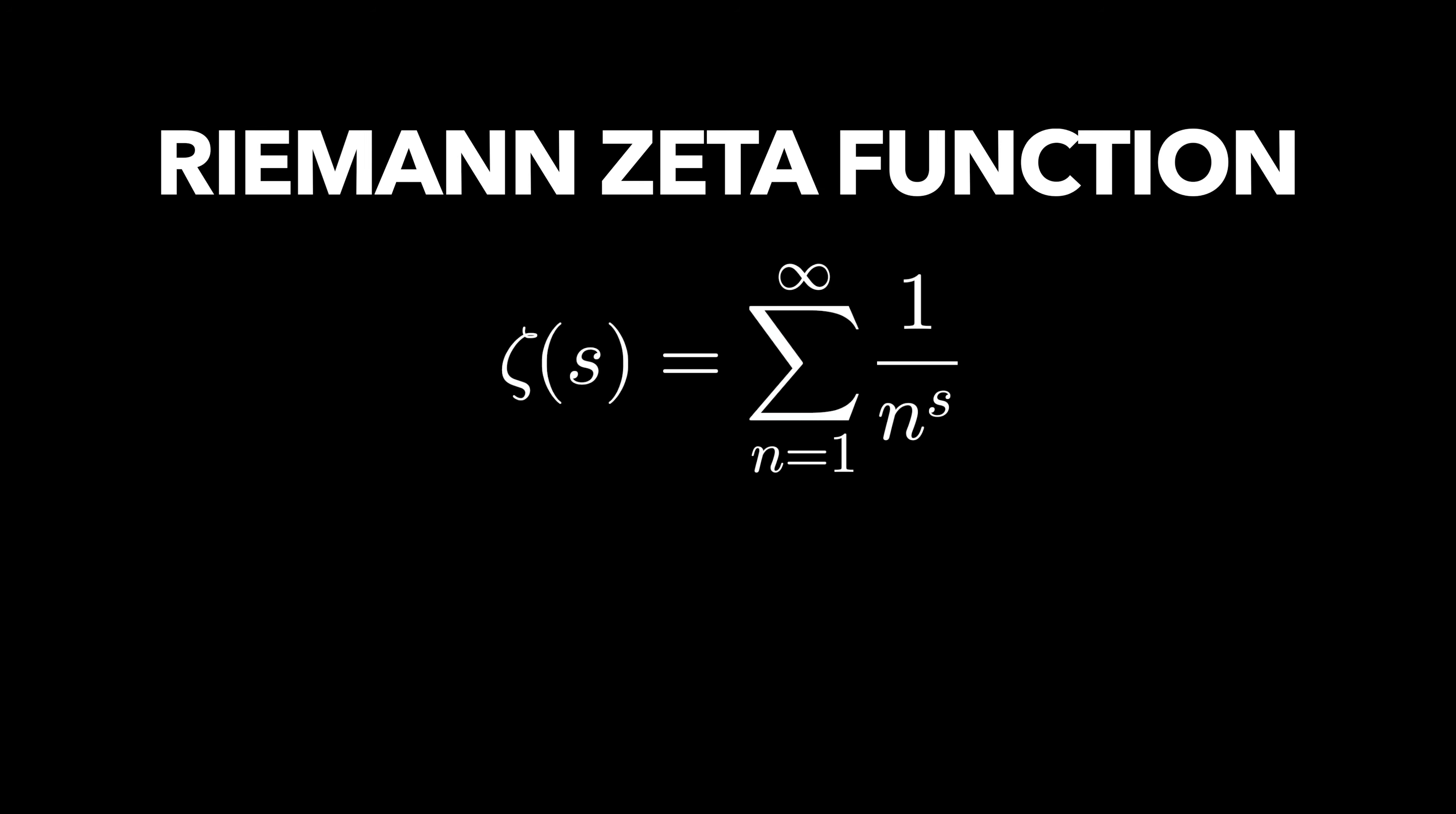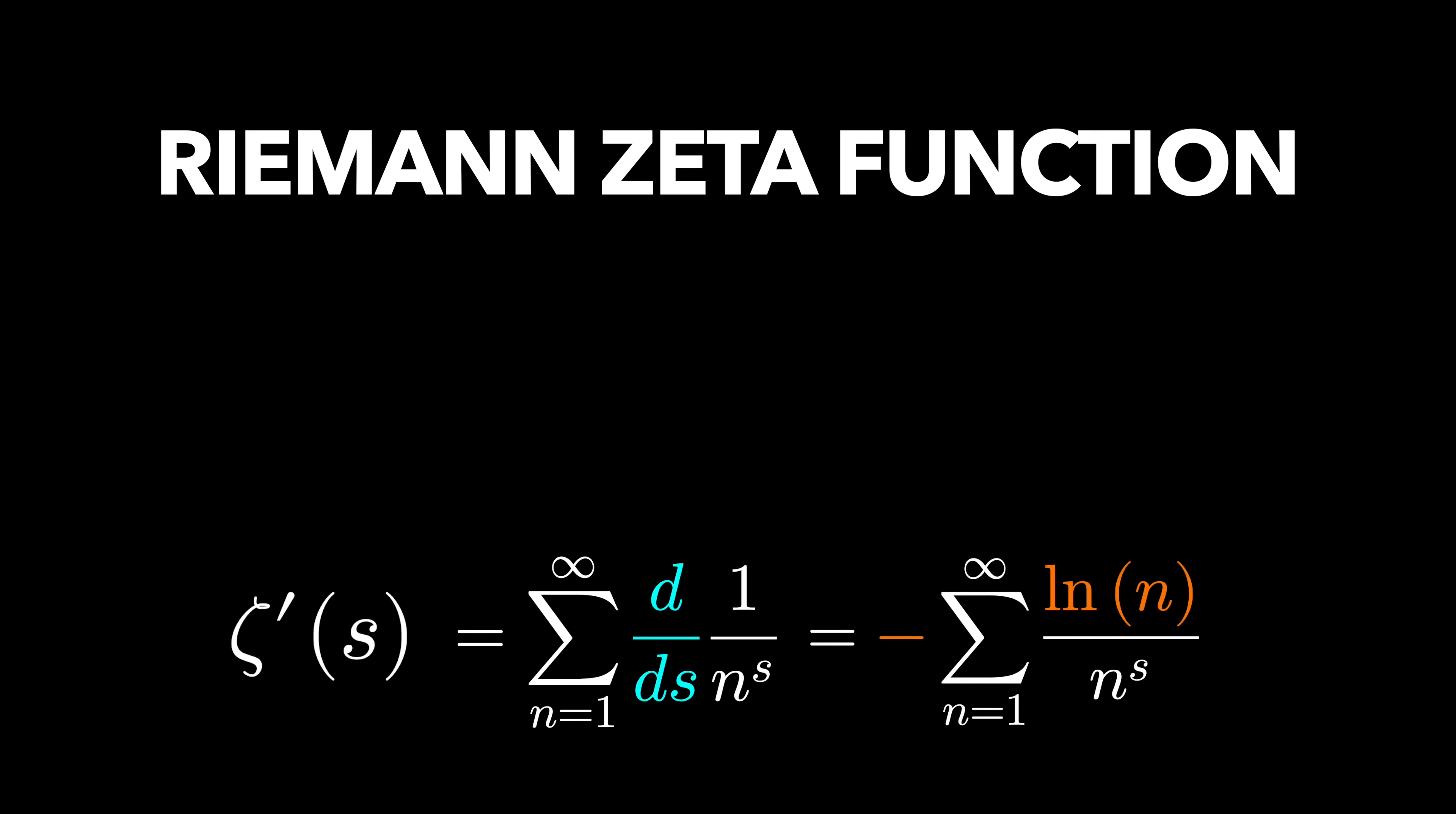Now, I don't see any logarithms in this sum, but we will after we take the derivative with respect to s. The derivative of 1 over n to the s, with respect to s, is minus 1 over n to the s times ln of n.